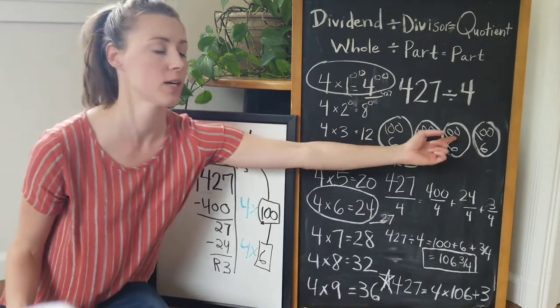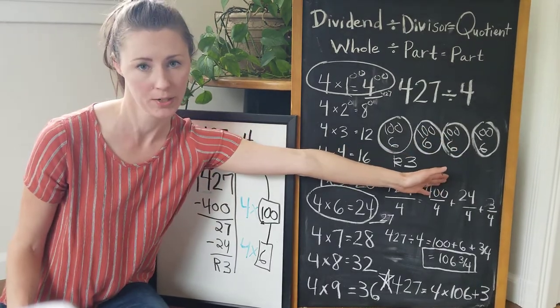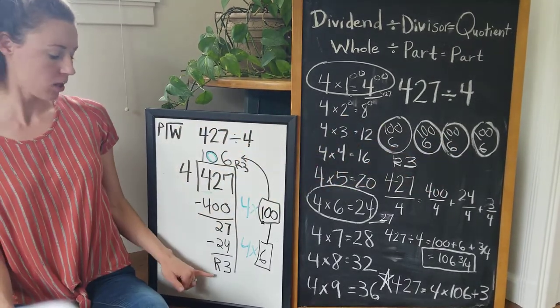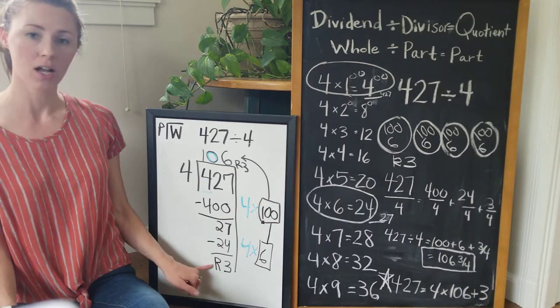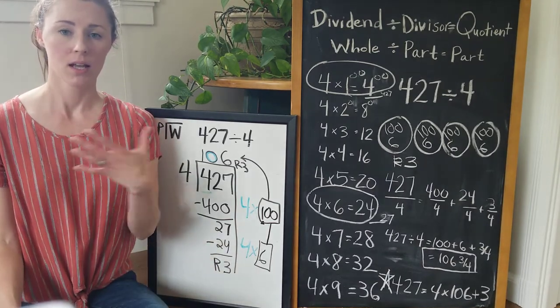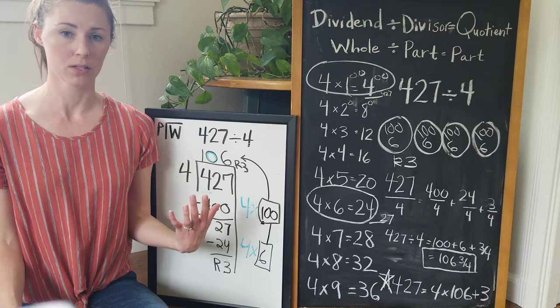That means I could place one more into each group and then have one remainder. So it has to be smaller than our divisor. It could be zero. If you get zero, that means it's divided equally amongst those groups.